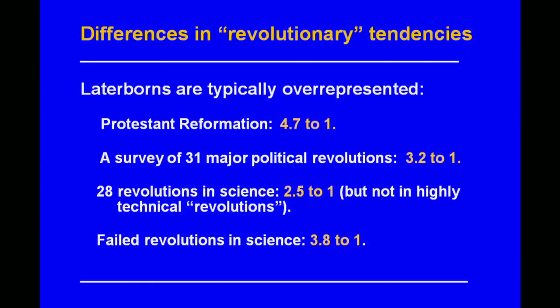Looking at history in general, laterborns — corrected for their expected numbers — were overrepresented in things like the Protestant Reformation by almost five to one compared to firstborns. In a survey of more than 30 political revolutions, including the French Revolution and the Russian Revolution, they're about three times more likely to support these movements. In revolutions in science, they're about twice as likely — but with a strong exception: the more technical the revolution, for example Newtonian theory or Einstein's theory of relativity, the more likely firstborns were to innovate. When the theory was something the Pope hated, laterborns loved it. When the theory was something the Pope couldn't understand, firstborns had a shot.